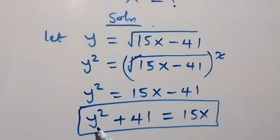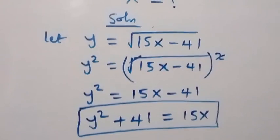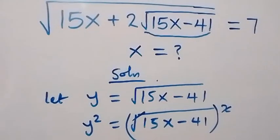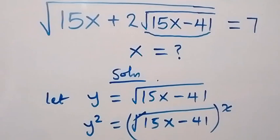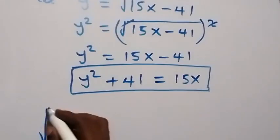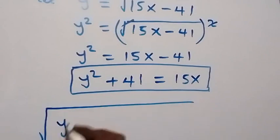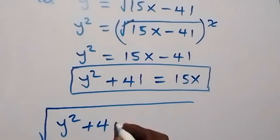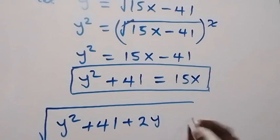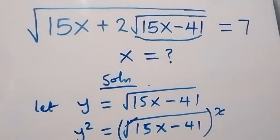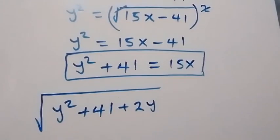So 15x can be written as y squared plus 41. The original relation now becomes: square root of (y squared plus 41) plus 2 times the square root of (15x minus 41). Since square root of 15x minus 41 is simply y, that term becomes y. So we have square root of (y squared plus 41) plus 2y equals 7.